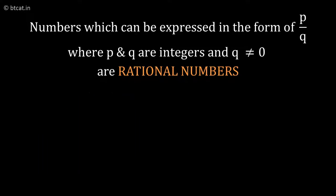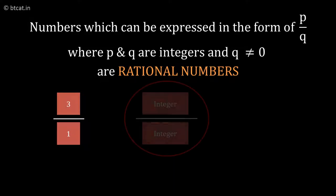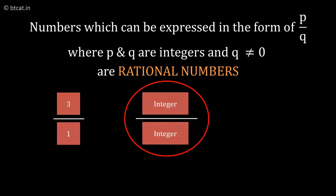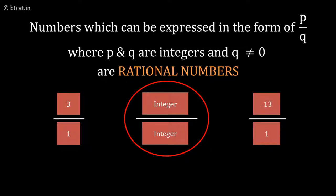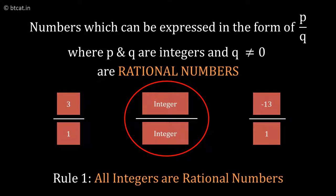There are three rules of rational numbers which can be understood from the definition. We can have 3/1 as a rational number - anything which is p/q, integer upon integer, is a rational number. So 3/1 is a rational number, -13/1 is a rational number, which brings us to rule number one: all integers are rational numbers.